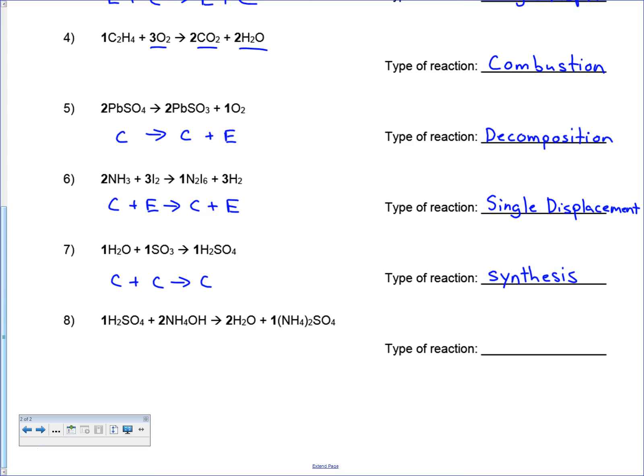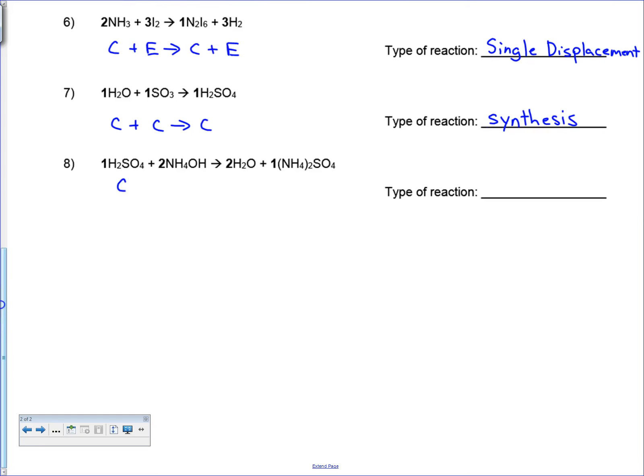Last one: H2SO4 plus NH4OH yields H2O and (NH4)2SO4. So this one, we've got compound plus compound yields compound plus compound. This is a double displacement reaction.